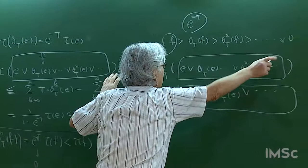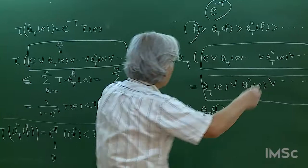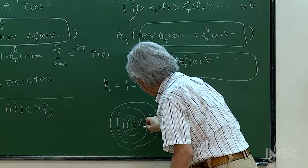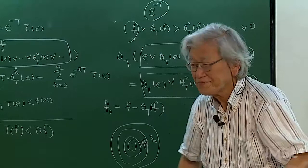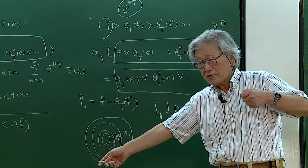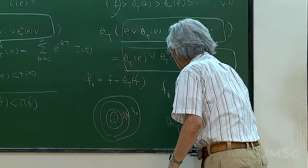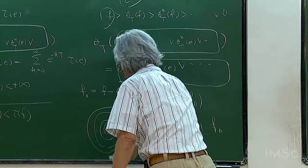So f₀ = f - θ_t(f) is a projection. What is happening is exactly like an onion ring going down. You have f₀, θ_t(f₀), θ_t²(f₀) — all mutually perpendicular. Applying θ_t in the negative direction gives another copy perpendicular to f₀, because everything shifts one step to the left. We consider {θ_t^n(f₀) : n ∈ ℤ}.